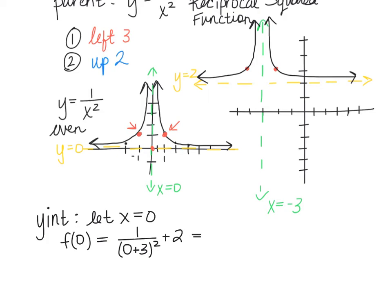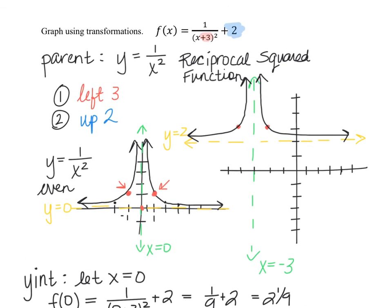1 over 3 squared is 1 ninth. 1 ninth plus 2 is 2 and 1 ninth. So that means our y-intercept, when x is equal to 0, is 2 and 1 ninth. Let's go ahead and plot that point. Let's just see if it's in the proper location according to the two branches that we already graphed. If we were to go up 2 and 1 ninth, you can see that would be approximately right there. That's about where we had the branch intersecting the y-axis, so that looks good.